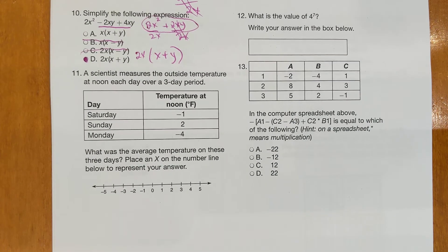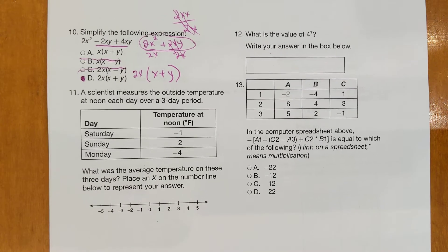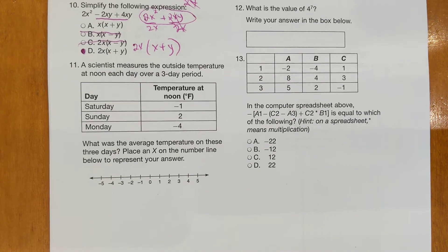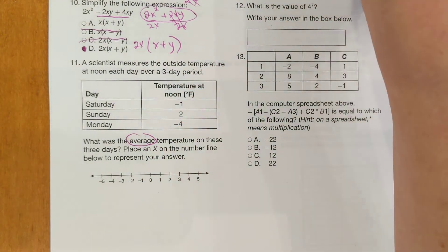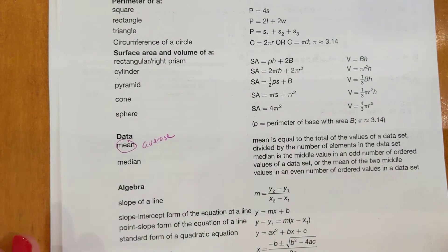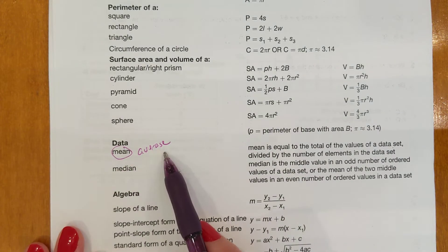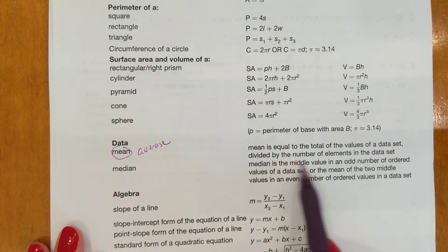Number 11. A scientist measures the outside temperature at noon each day over a 3-day period. Saturday negative 1, Sunday 2, Monday negative 4. What was the average temperature on these 3 days? Place an x on the number line below to represent your answer. Okay, so they said the average. Looking at your formula sheet that you get to have GED day, average means mean. We talked about this in part one. Average and mean, same thing, and it discusses how you find the average.